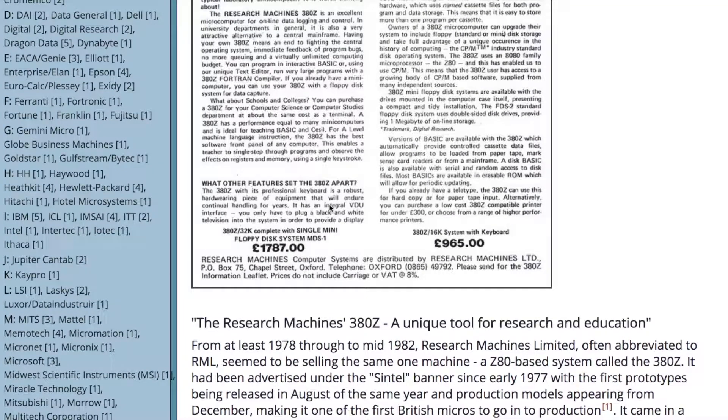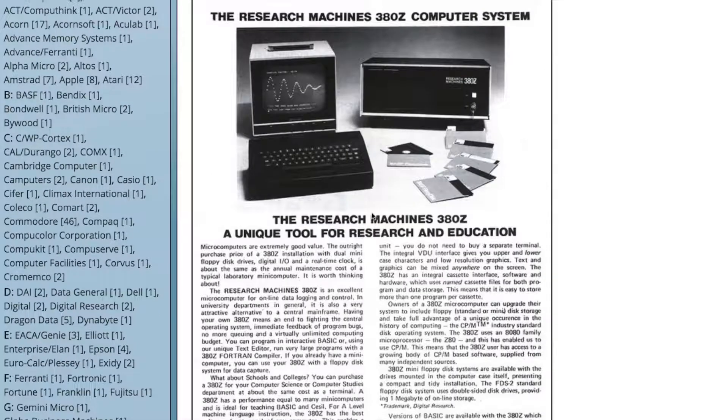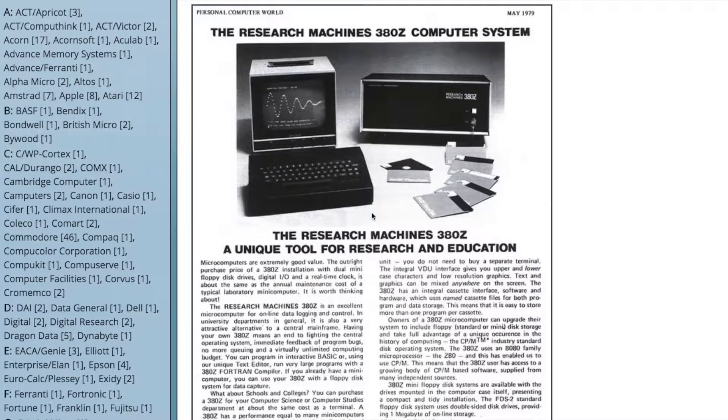In 1979, you could buy a really nice car for about £4000. So we're talking a lot of money to buy one of these computers. And Research Machines, it was a UK British company, it looked like they're based in Oxford. They targeted the education market and they sold a lot of computers into schools.